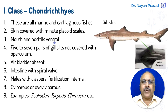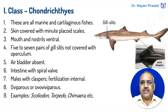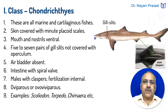Mouth and nostrils are ventral, on the lower side. Five to seven pairs of gill slits are found in them, which are not covered with an operculum. In cartilaginous fishes, gill slits can be seen from outside and are not covered by a gill cover. The gill cover, also called operculum, is found in bony fishes. So class Chondrichthyes includes fishes with no gill cover.